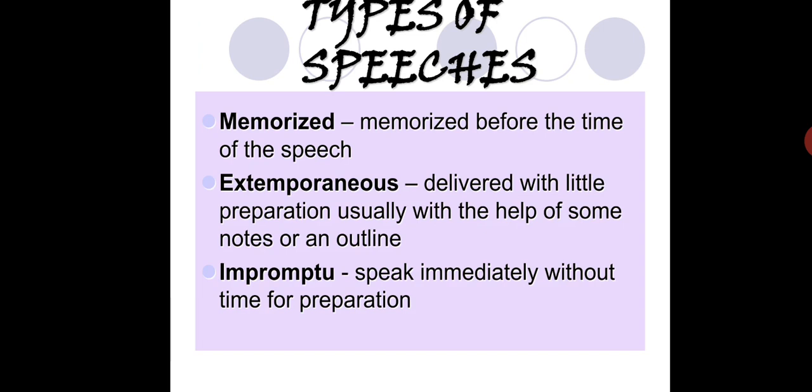Types of speech: memorized speech — in Part 1, you'll know the answer, you just have to deliver it in a less obvious way. Extemporaneous speech is delivered with little preparation, usually with the help of some notes or an outline — the examiner gives you prep time, which makes it easier. Impromptu is the off-the-cuff response where you speak immediately without preparation time — usually in Part 3, where questions are more abstract and challenging. You need to maintain your composure even when you find it difficult to respond.